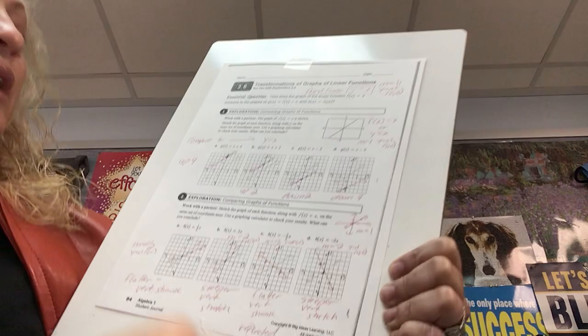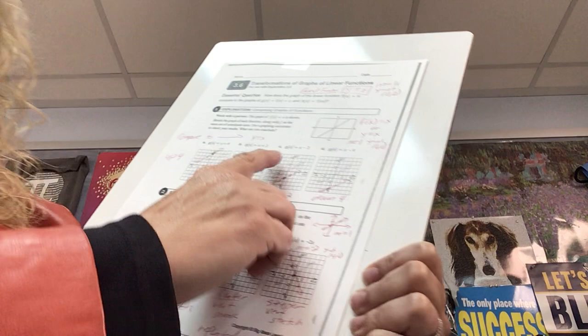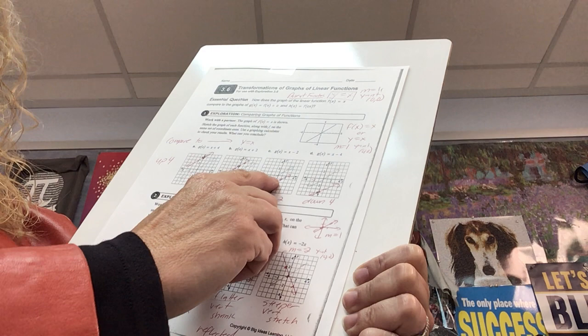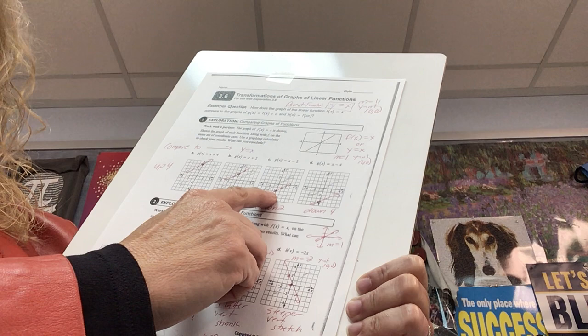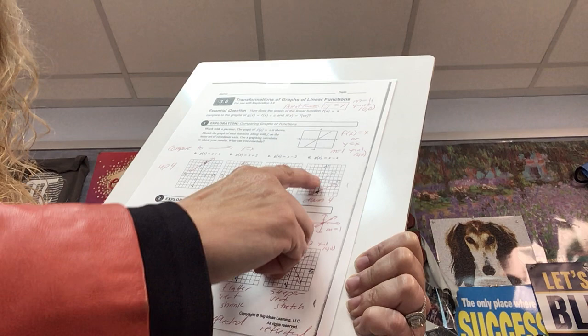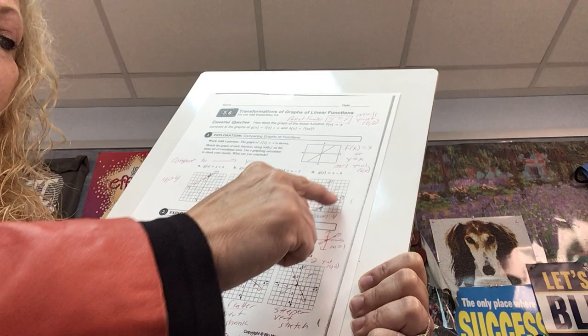We're trying to look for patterns here — how does changing an equation change the graph? Let's take a look at C. This has a y-intercept of 0, negative 2, slope of 1: up 1, right 1. So how did this change from the parent graph? It moved down 2. Take a look at D: y-intercept of 0, negative 4, slope of 1. It moved down 4.